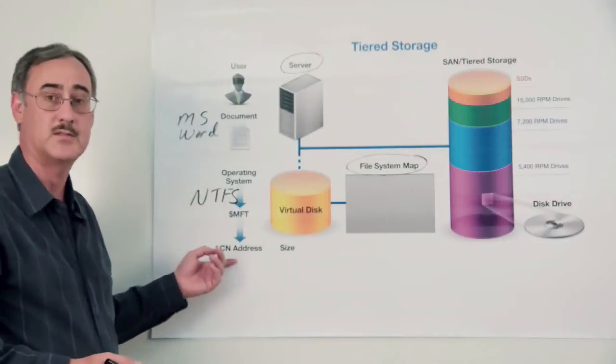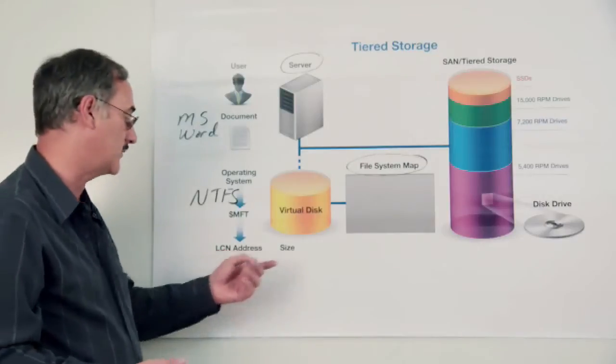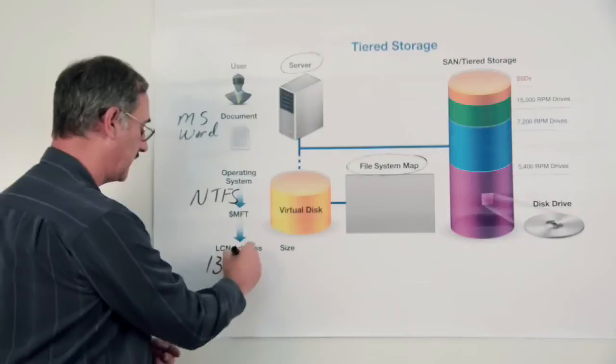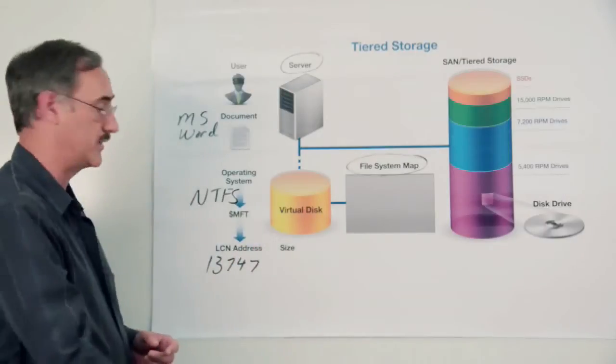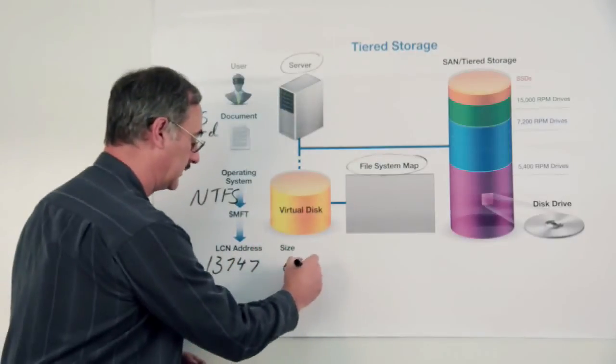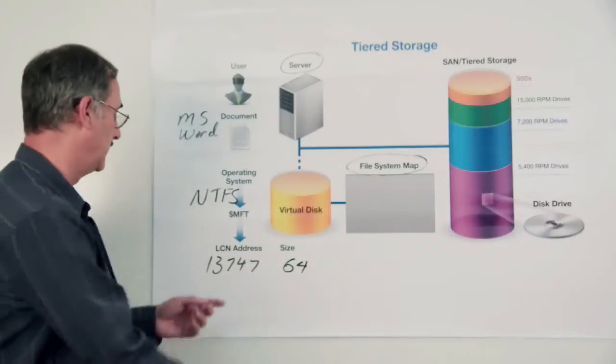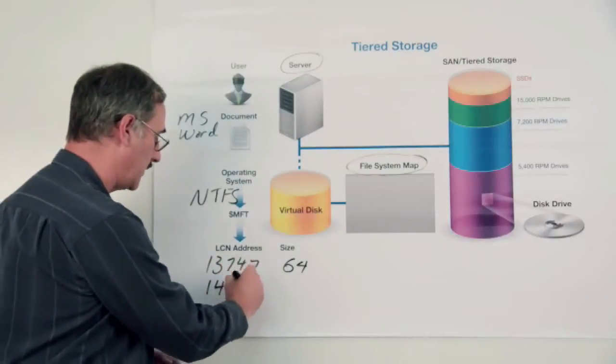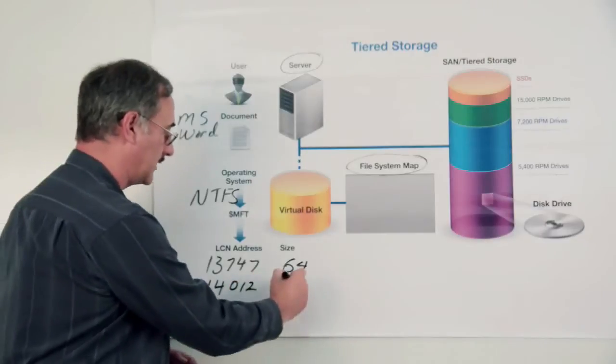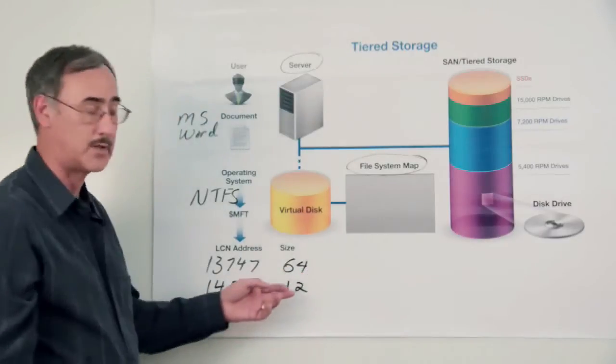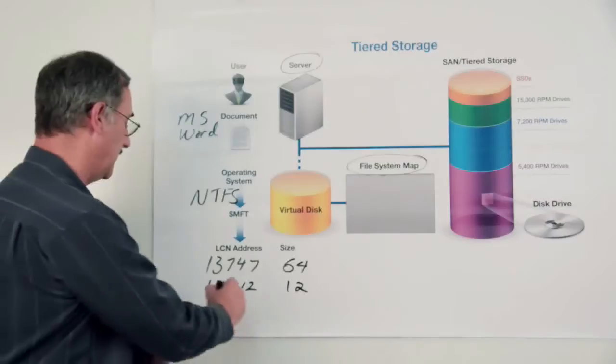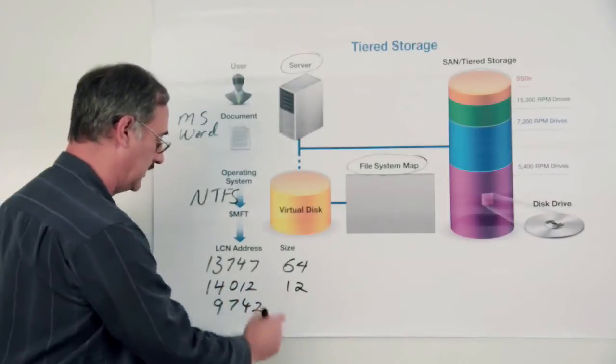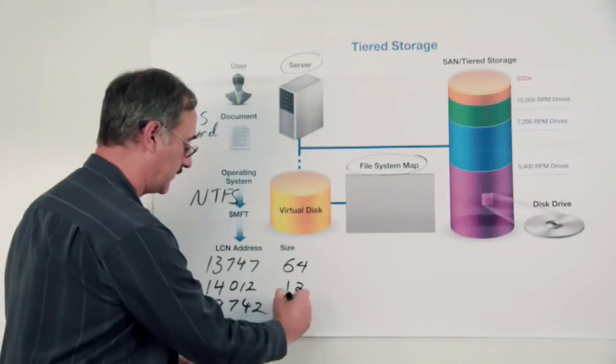Now a file will be referenced based upon its logical cluster address. So maybe the address starts out at 13,747 for a size of, let's say, 64 clusters. Then maybe the next piece of that file begins at 14,102 for a cluster size or a combination of clusters of 12.